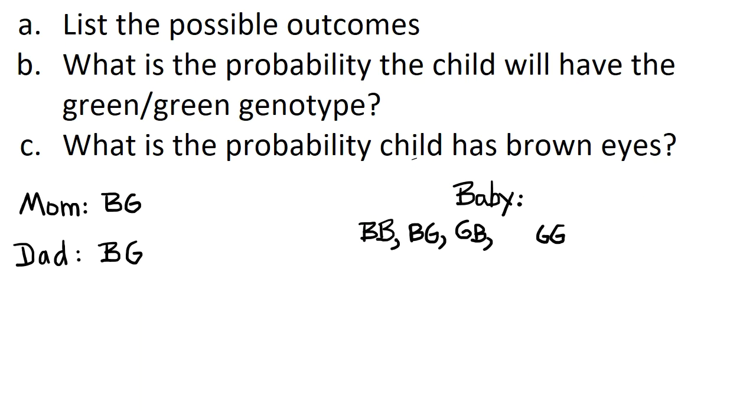We see that there are four possible genotypes. These four possibilities answer part A. For part B, what is the probability the child will have the green-green genotype? Only one is green-green out of all four of them, so it's 1 divided by 4 or 0.25, or that's the same as 25%.